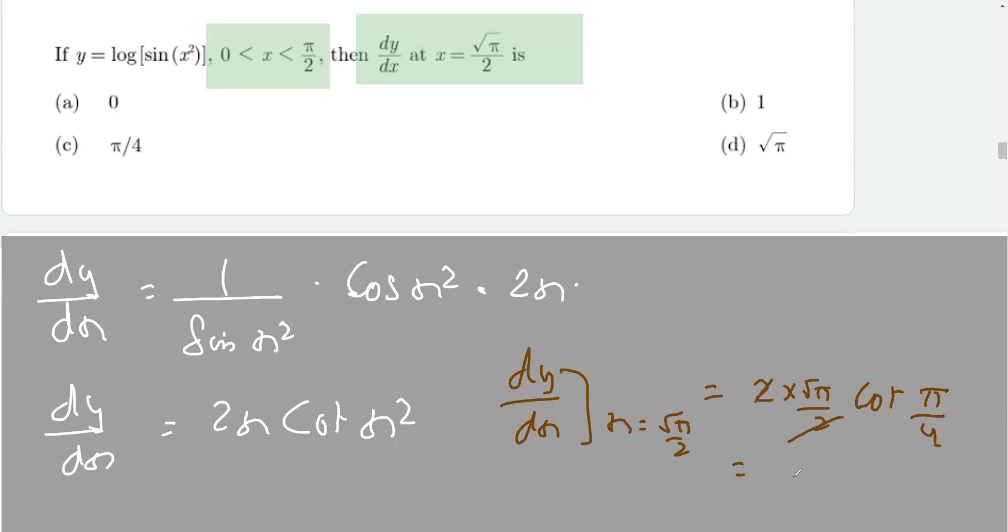So this 2 gets cancelled, we are getting square root of pi from here, and cot of pi by 4, which is 45 degrees, equals 1. So that equals square root of pi. Therefore, option d is the correct option in this case.